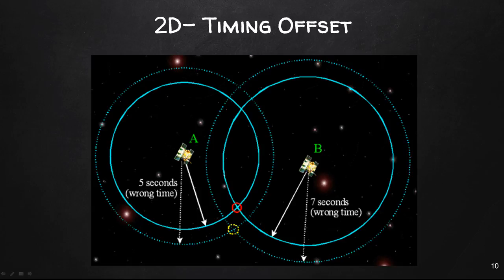If the receiver clock is 1 second fast, ahead 1 second from satellite clock, the receiver will think the distance from satellite A is 5 seconds and the distance from satellite B is 7 seconds. It thinks our position is where the two dotted circles intersect. We obviously have an incorrect position here because of timing offset.